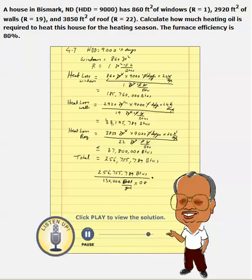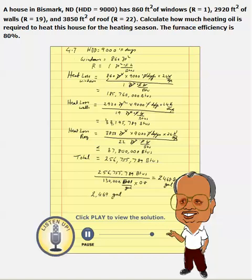The efficiency is given as 0.8, so only 80% of this will really be available as heat, making the requirement a little bit higher. Doing this calculation, it will be approximately 2,468.9 gallons of oil required to heat this place.